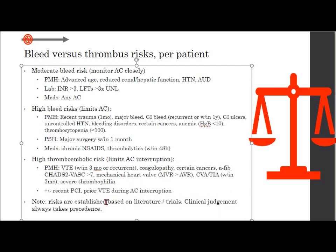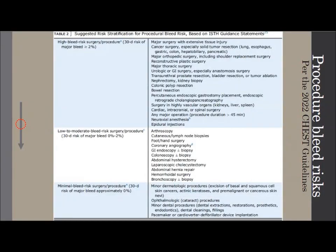Note these are risks based on literature and trials, and clinical judgment will always take precedence. I also summarized procedural bleed risks per the 2022 CHEST guidelines. If you're not sure whether your procedure is high, low, or minimal bleed risk, look through this. Generally, if you're doing anything breaking the surface of the skin significantly, you're beyond a minimal bleed risk and you're going to worry about the anticoagulant.